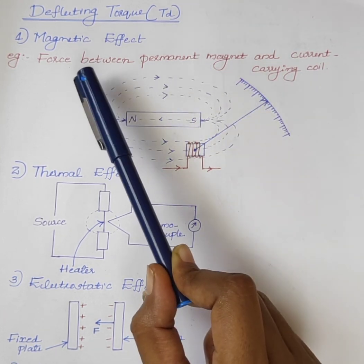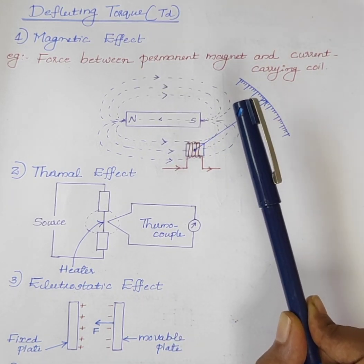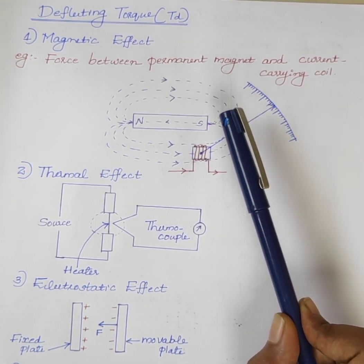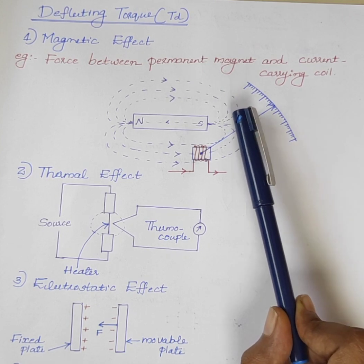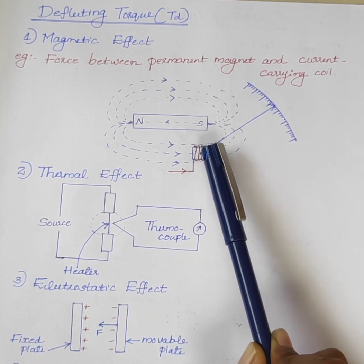First one is the magnetic effect. The main principle behind the magnetic effect is that when a current carrying conductor is placed in a magnetic field, it experiences a force.